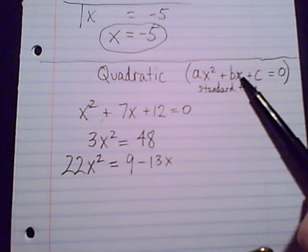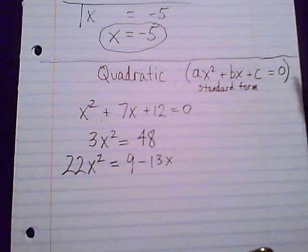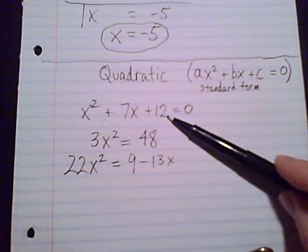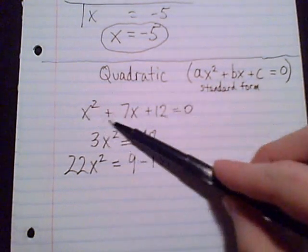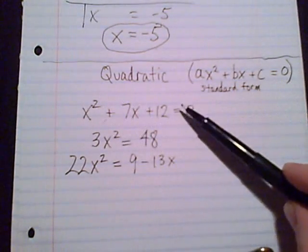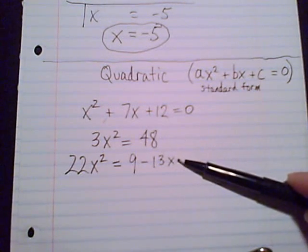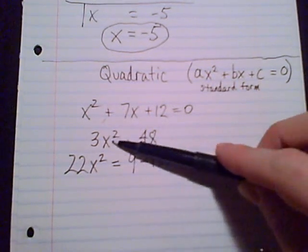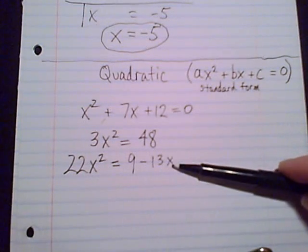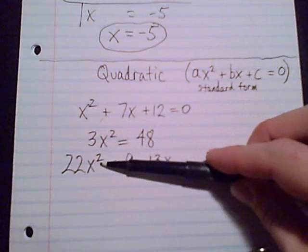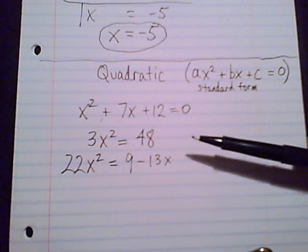Maybe the equation starts out in that form, all the terms on the left side, descending order, equals to zero. That's nice, maybe not. Definitely this one, but if we move some terms, I could add 13x to both sides and take away nine and move these terms to the left side.